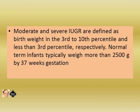Moderate and severe SGA are defined as birth weight in the 3rd to 10th centile and less than the 3rd centile respectively. Moderate means 3rd to 10th centile and severe means less than the 3rd centile. Normal term infants typically weigh more than 2500 grams by 37 weeks of gestation.